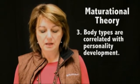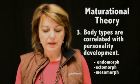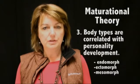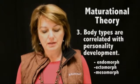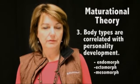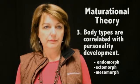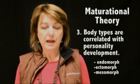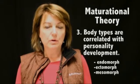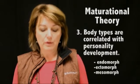There are three main body types. One's called the endomorph, which is tall and thin. The ectomorph, which is more like an athlete's body. And mesomorph would be more round. He said that it correlated with personality development.